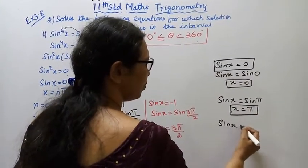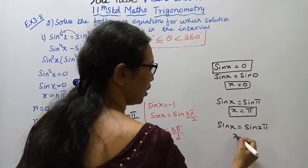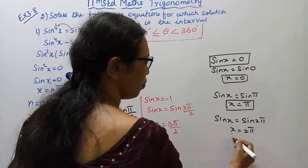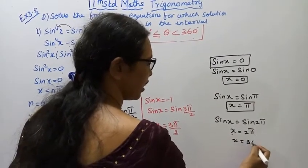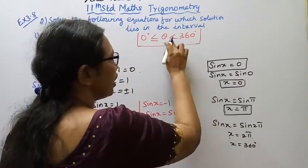sin x = sin 2π, so x = 2π. x = 2π equals x = 360 degrees, which is less than or equal to 360.